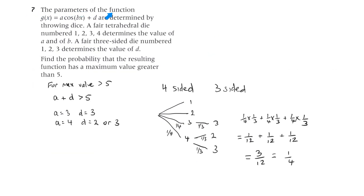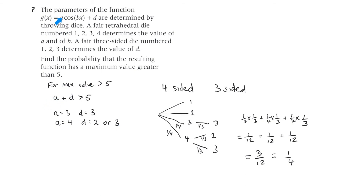The parameters of this function are determined by throwing dice. A fair tetrahedral die numbered 1, 2, 3, 4 determines the value of a and of b. A fair three-sided die numbered 1, 2, 3 determines the value of d. Find the probability that the resulting function has a maximum value greater than 5. For a maximum value greater than 5, the number a plus d must be greater than 5.